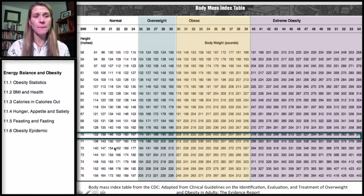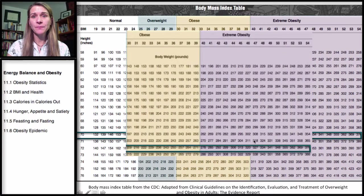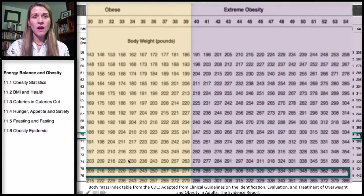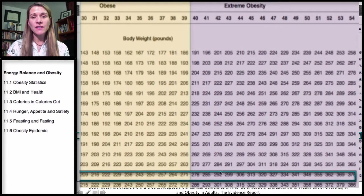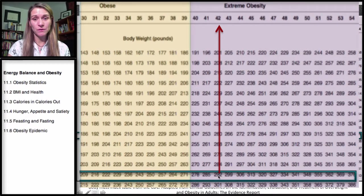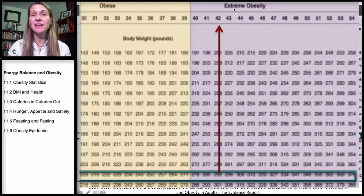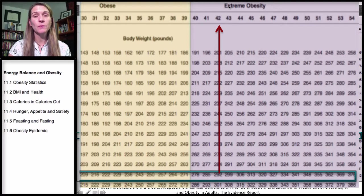Let's take another example: someone who is 70 inches, so that would be 5'10". If this individual weighs 290 pounds, that's going to put them at a BMI of 42, which is in the extreme obesity range, because anybody over a BMI of 40 would be considered extremely obese.